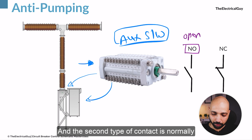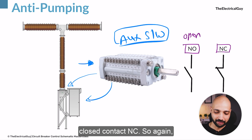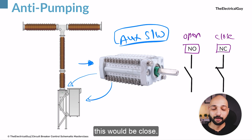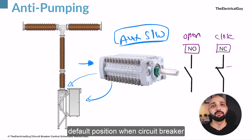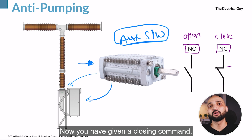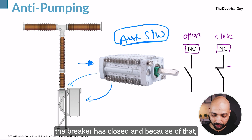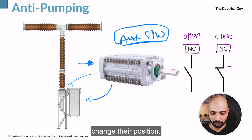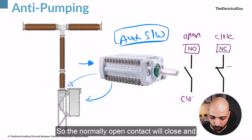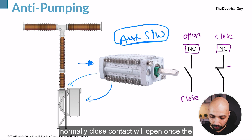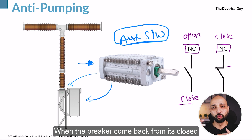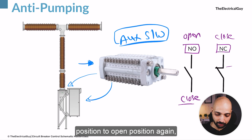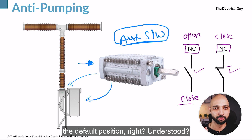The second type of contact is the normally closed contact (NC), whose default position is closed. These are the default positions when the circuit breaker is in the open condition. When a closing command is given and the breaker closes, these contacts also change their position — the normally open contact will close and the normally closed contact will open. When the breaker comes back from closed to open position, the contacts return to their default positions.